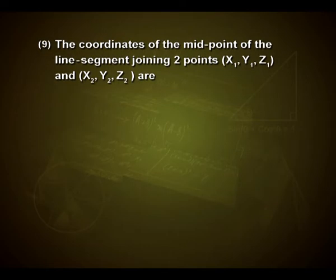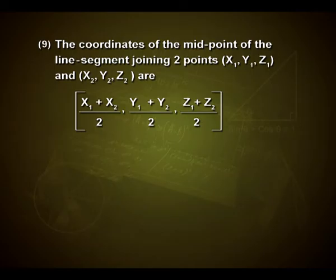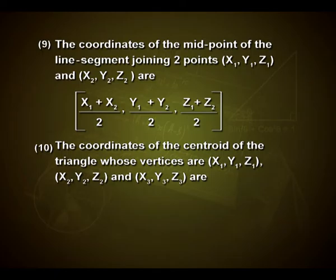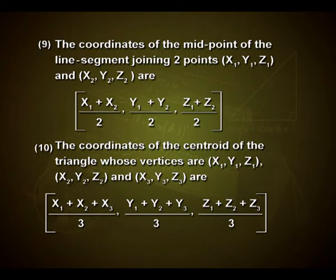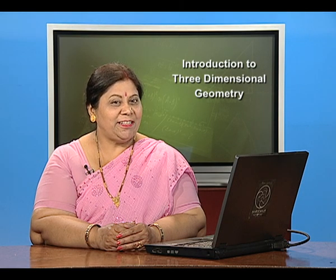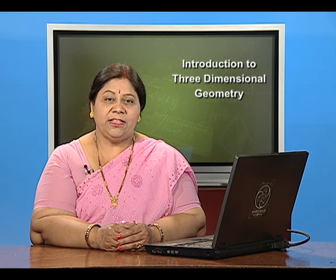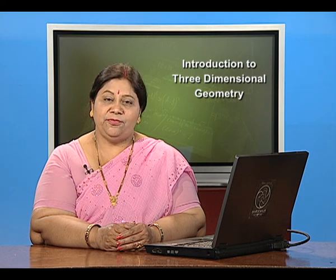The coordinates of the midpoint of the segment joining (x1, y1, z1) and (x2, y2, z2) are [(x1+x2)/2, (y1+y2)/2, (z1+z2)/2]. The coordinates of the centroid of a triangle with vertices (x1, y1, z1), (x2, y2, z2), and (x3, y3, z3) are [(x1+x2+x3)/3, (y1+y2+y3)/3, (z1+z2+z3)/3]. Hope you enjoyed studying 3-dimensional coordinate geometry. Thank you.